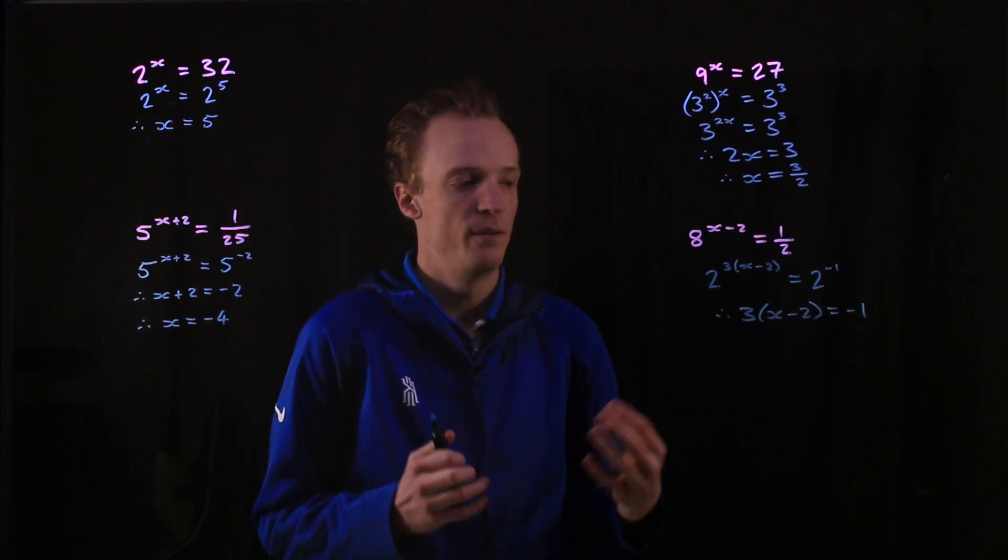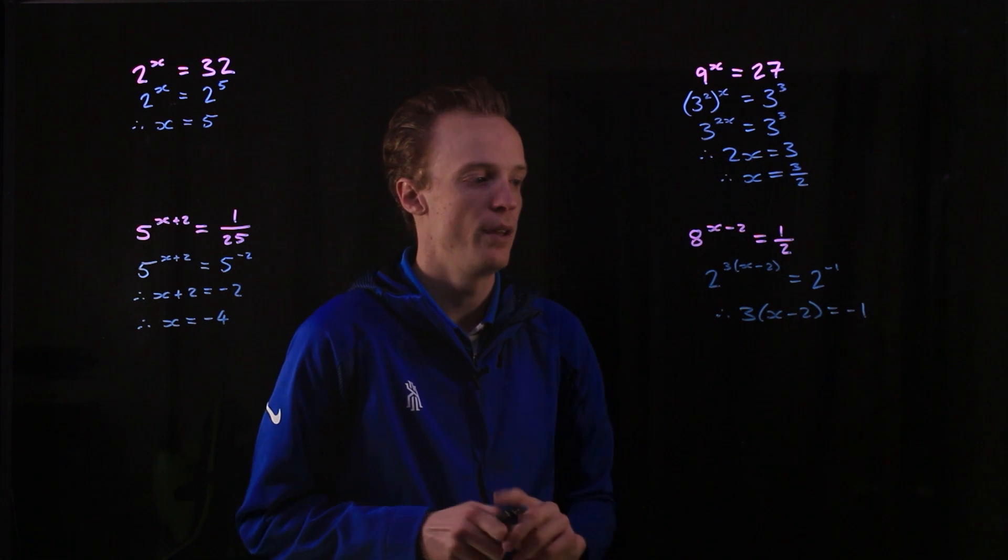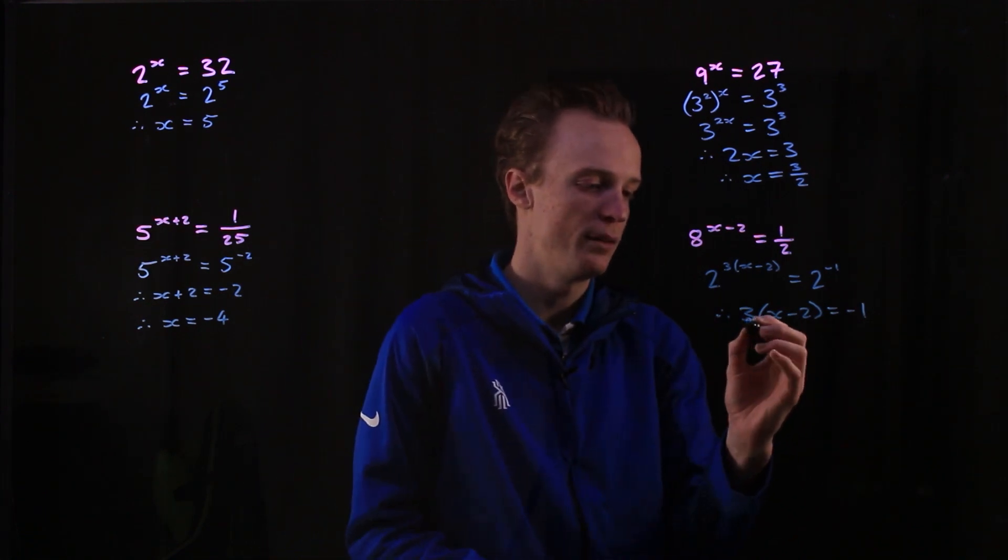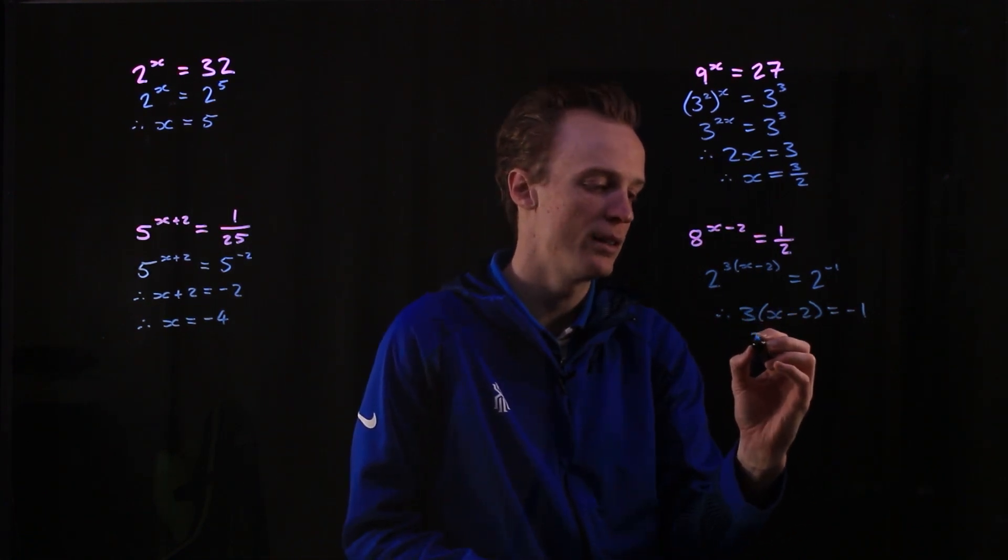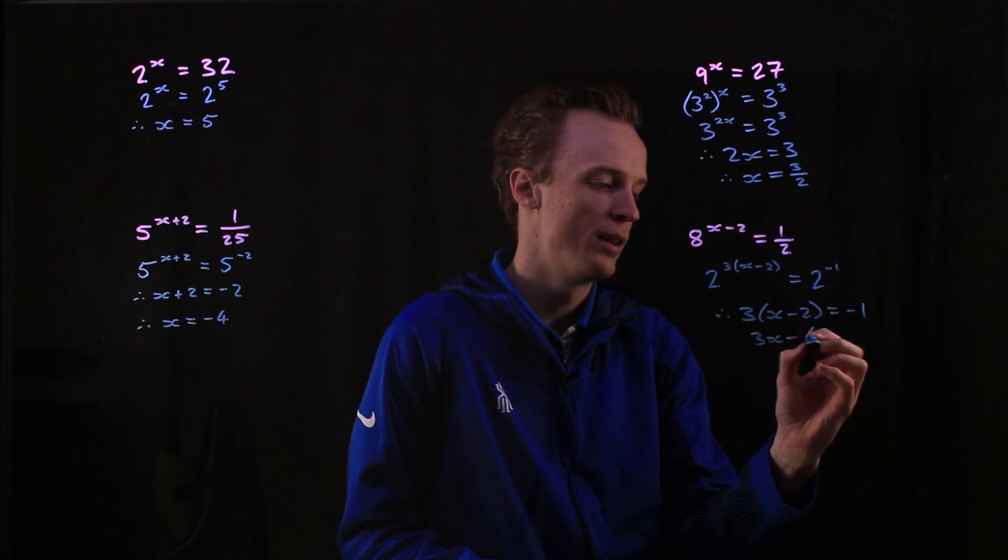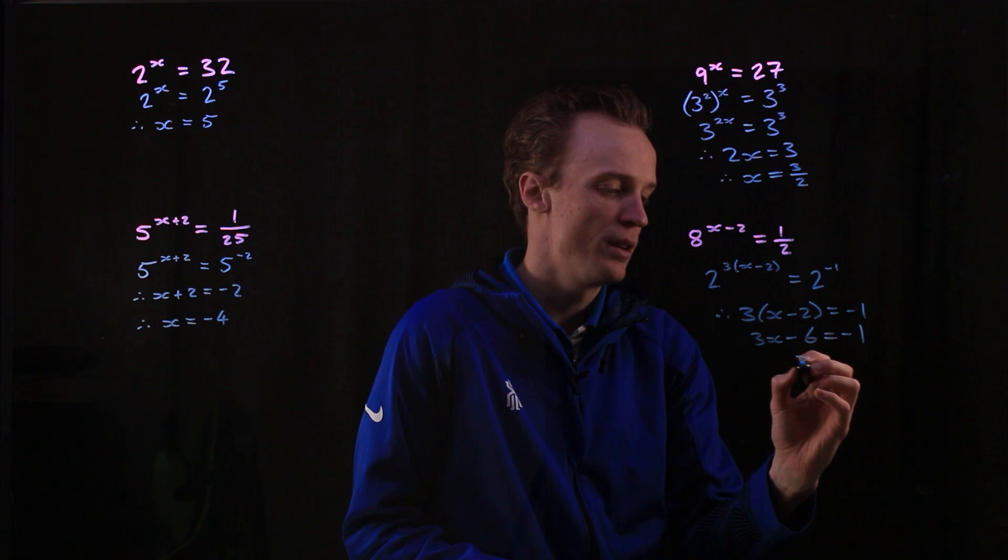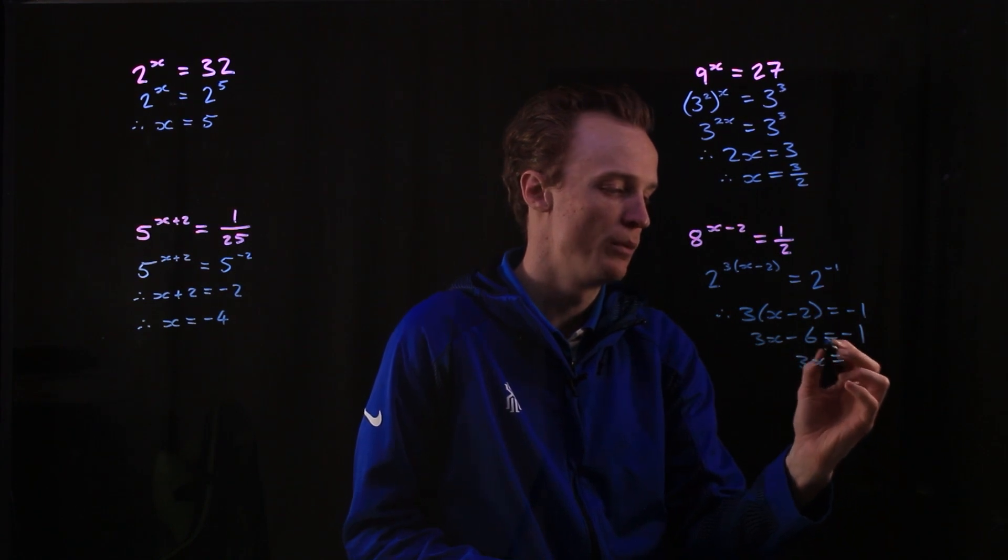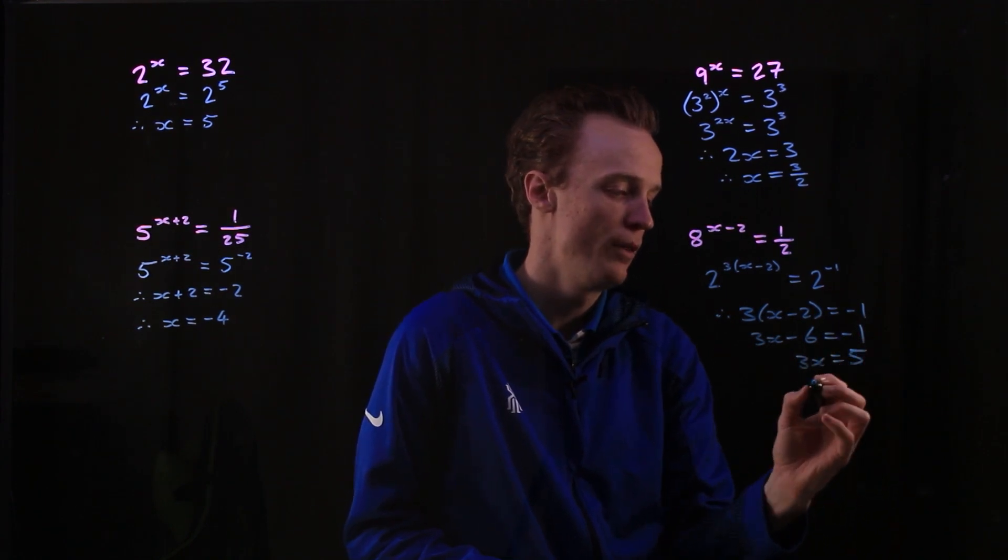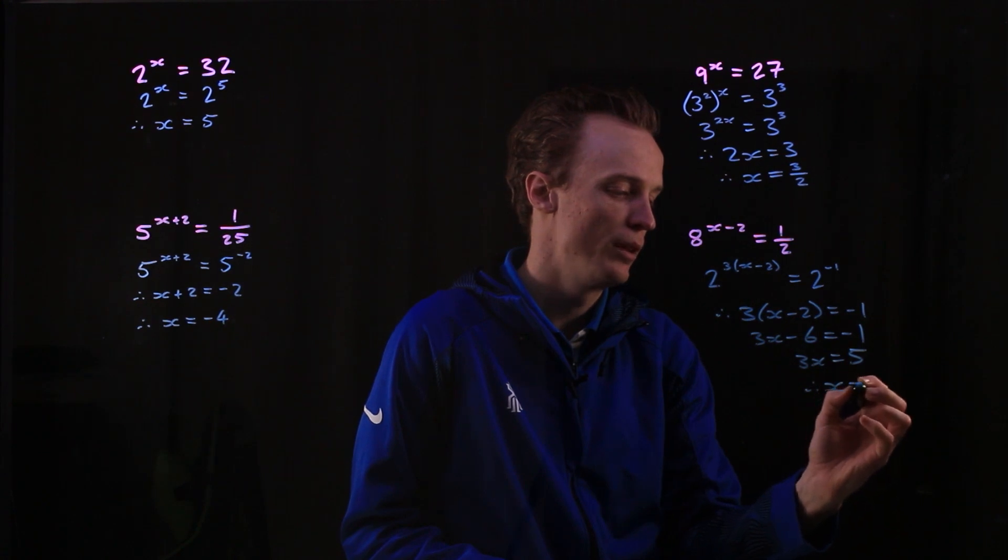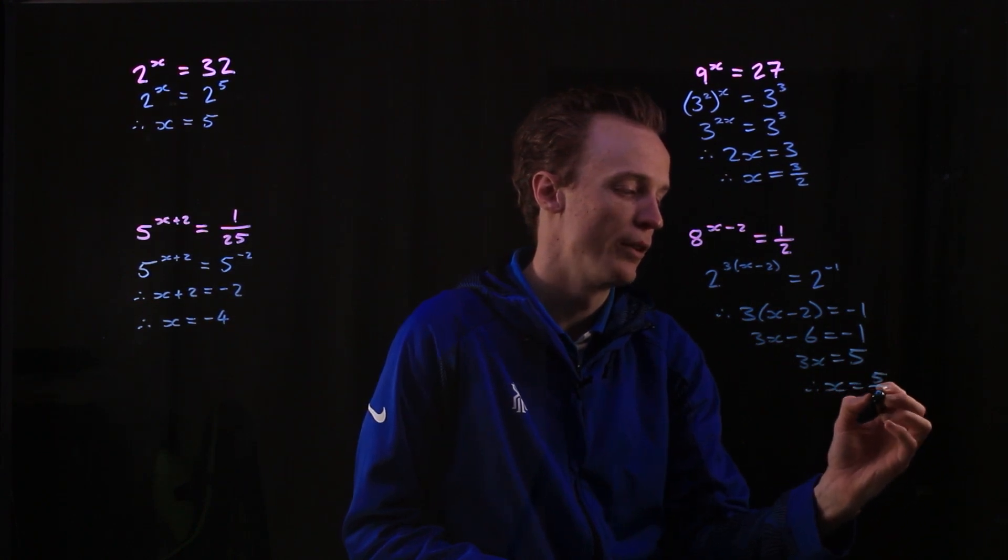And I can now use my inverse operations to find the value of x. So if I'm doing that, I'm just going to multiply the 3 out. So that'll be 3x minus 6 is equal to negative 1. Add 6 to both sides. So 3x will be 5. And then divide by 3 will leave my x to equal 5 over 3.